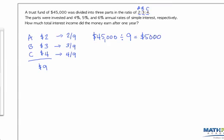And then it becomes clear what A, B, and C are now. A is two-ninths, so that is $10,000. B is three-ninths, which is $15,000. And C is four-ninths, which is $20,000.